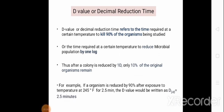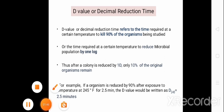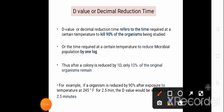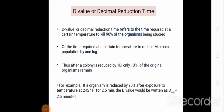For example, if an organism is reduced by 90% after exposure to a temperature of 245 degrees Fahrenheit for 2.5 minutes, the D value would be written as D₂₄₅ = 2.5 minutes.